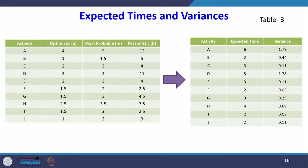Using the mean and variance formulas, the three time estimates are converted into a single time estimate and a variance for each activity. For example, activity A with three time estimates 4, 5, 12 is converted to single time estimate 6 with variance 1.78. Like that, I have found the expected time and variance for all the activities.